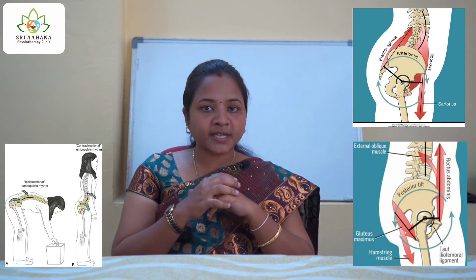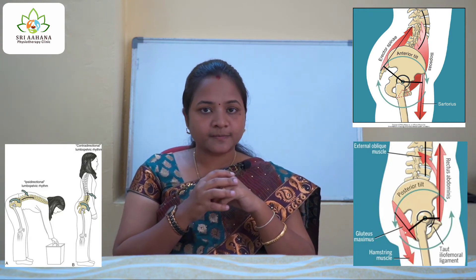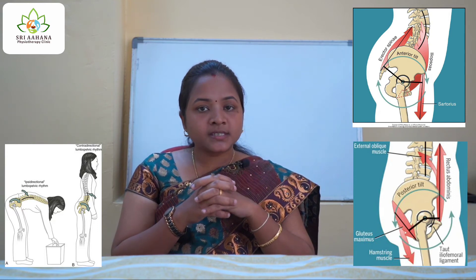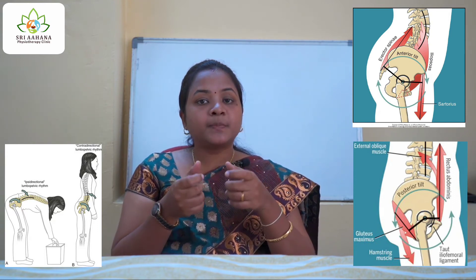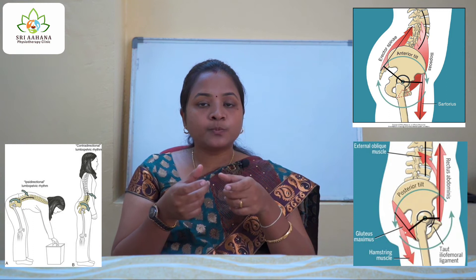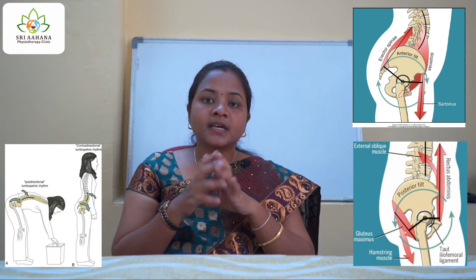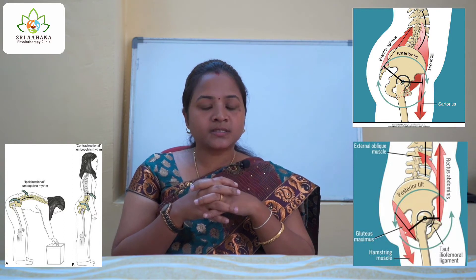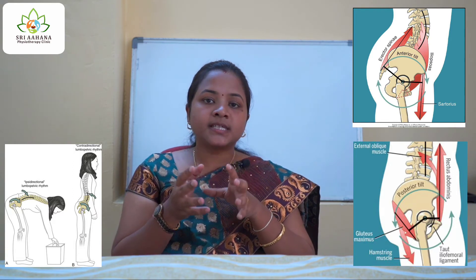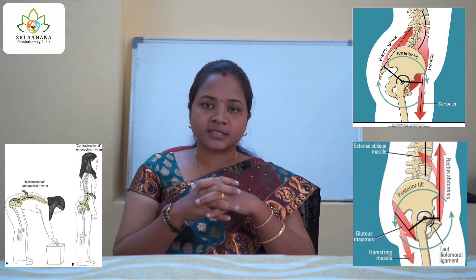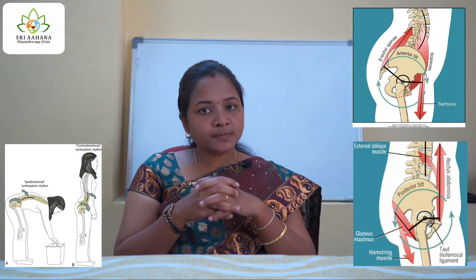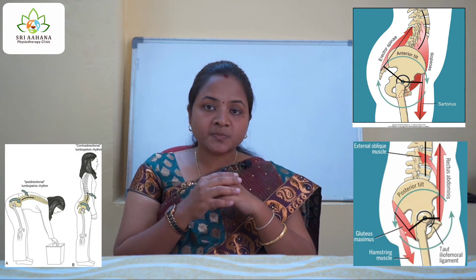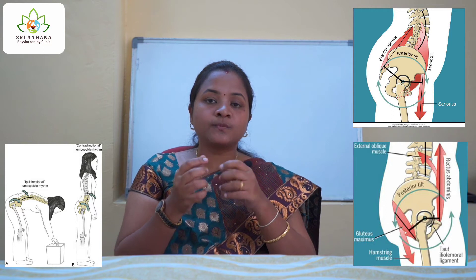To bring about erect posture from trunk flexion, the pelvis has to act first, followed by lumbar spine extension. When we try to bring the spine erect, the pelvis has to posteriorly rotate, and this movement is initiated by the hip extensor muscles — which are the hamstrings and the gluteus maximus.